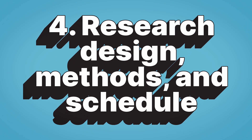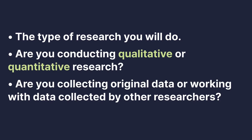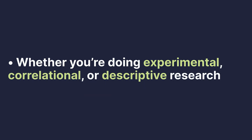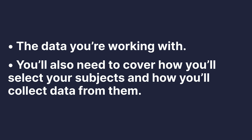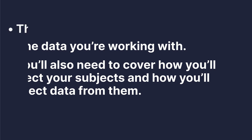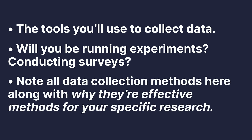Four: Research Design, Methods, and Schedule. In this section, make sure you cover these aspects: the type of research you will do — are you conducting qualitative or quantitative research? Are you collecting original data or working with data collected by other researchers? Whether you're doing experimental, correlational, or descriptive research. The data you're working with — you'll also need to cover how you selected your subjects and how you collected data from them. The tools you use to collect data — will you be running experiments? Conducting surveys? Note all the data collection methods here along with why they're effective methods for your specific research.